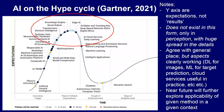Where are we on the Gartner hype cycle? The y-axis is expectations — nothing objective at all. It's only perception, and there's huge spread in the details. Many areas we work with are probably right in the trough. But some are very useful in pharma — deep learning for images works very well. Histopathology and cellular imaging translate well to the clinic.